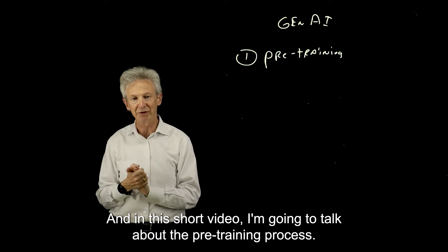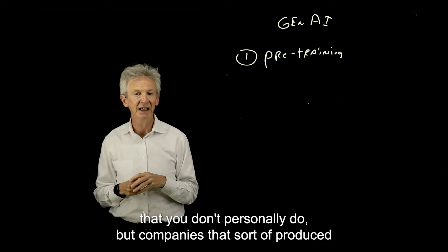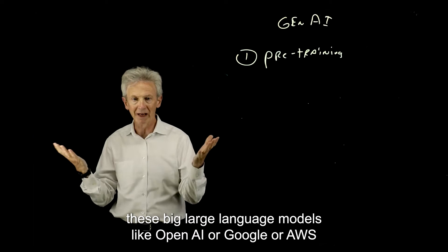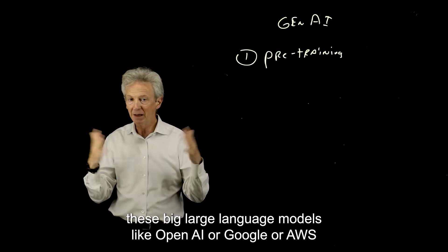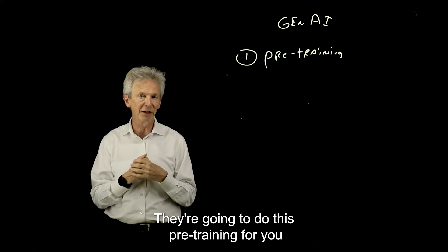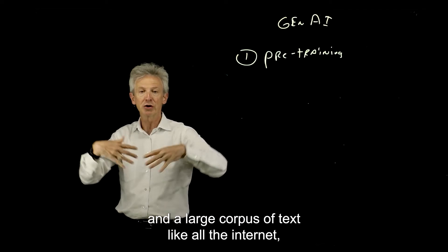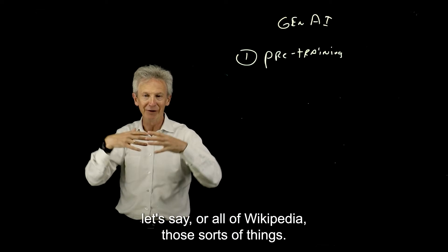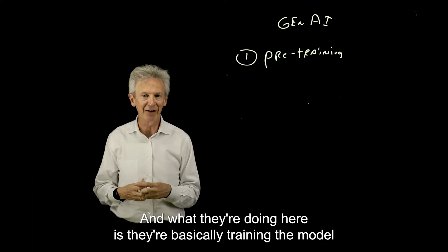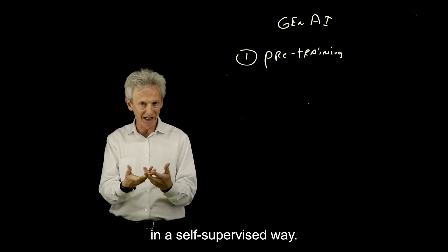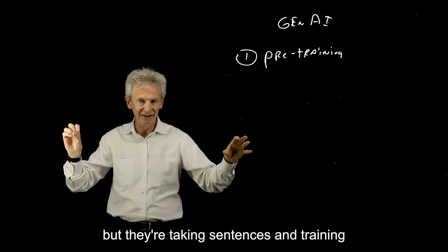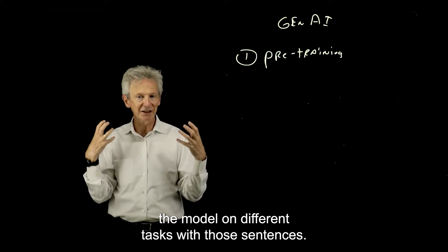In this short video, I'm going to talk about the pre-training process. This is the training that you don't personally do, but companies that produce these large language models like OpenAI or Google or AWS or open-source models will do this pre-training for you on a large corpus of text, like all the Internet or all of Wikipedia. What they're doing here is they're basically training the model in a self-supervised way. The model is not being labeled by humans, but they're taking sentences and training the model on different tasks with those sentences.